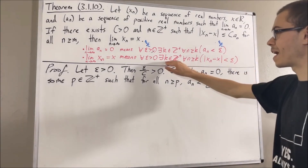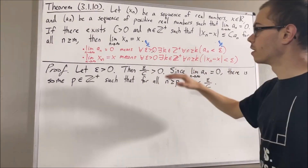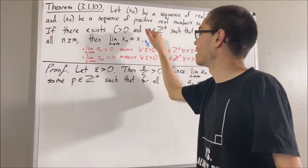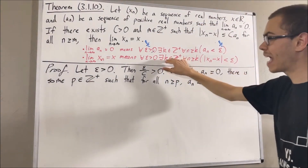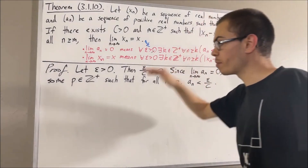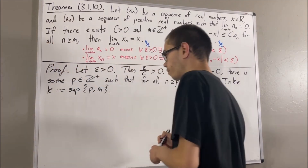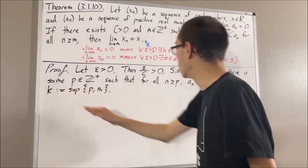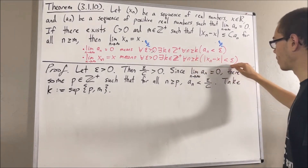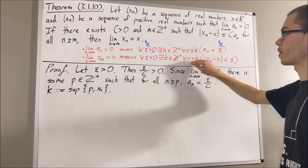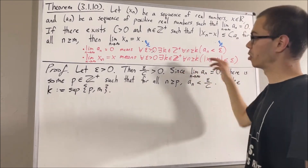Now remember, our goal is to find a positive integer which makes this statement turn out true. And we're going to show that the larger of p and m will make this turn out true. So let's take k to be the supremum of p and m. With this choice of k, we're going to show that this is true. We're trying to prove a statement about every positive integer greater than or equal to k, so give me an arbitrary positive integer greater than or equal to k. I'll call it n.